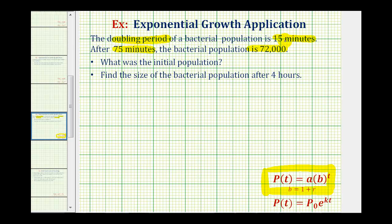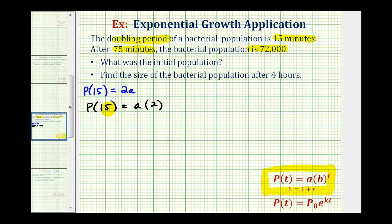Looking at the given information, the doubling time is 15 minutes. That means P(15) must equal two times the initial amount, or two times a. Looking at the form of our function, if P(15) must equal 2a, we have a times the base two. We can't just raise this to the power of t, because the exponent will actually have to be t divided by 15 in order for P(15) to equal 2a. Notice when t is 15, the exponent on two would be 15 divided by 15, or one, and a times two to the first is 2a, which satisfies the requirement. So our function P(t) must be in the form of a times two raised to the power of t divided by 15.